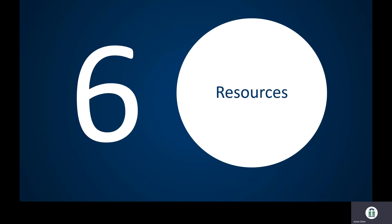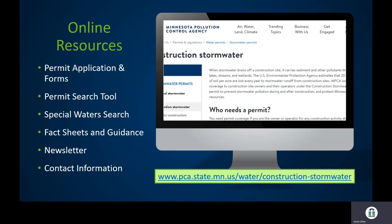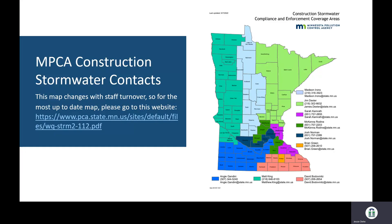Resources can be found on our MPCA website — everything from applications, forms, and search tools to contact information. There has been a name change and some staff turnover this past summer, so the website will have the most up-to-date contact information for your area, matching the county map shown in the video. The phone number and email are the same, but if you do any work in certain areas, your contact may have changed. If you're not sure, I'm just one phone call away and can get you to the right person.